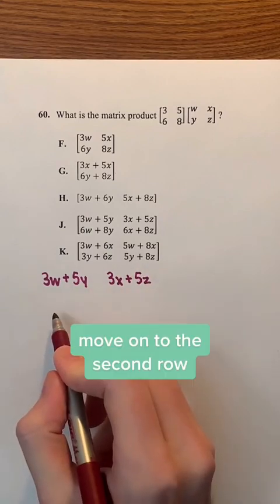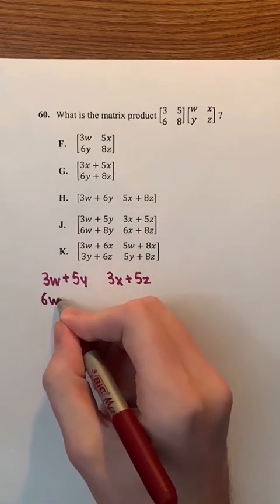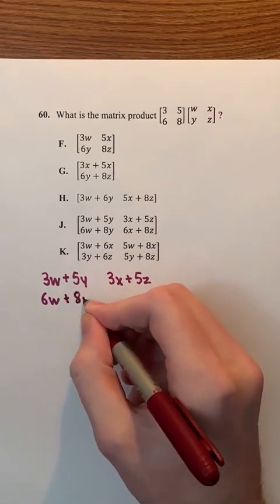Now we're going to move on to the second row. So first, we're going to multiply 6 times w, which is 6w. And we're going to add 8 times y, which is 8y.